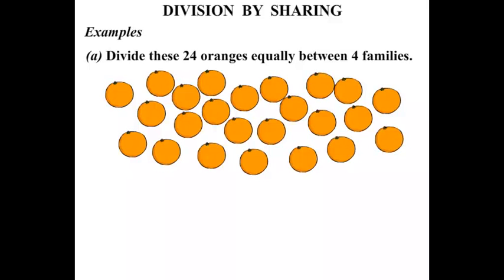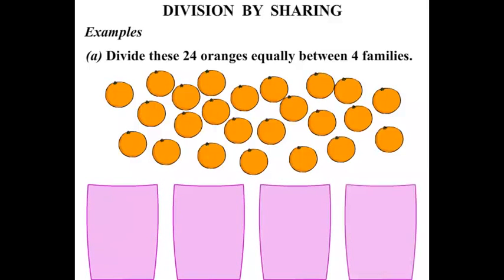Now between 4 families we are splitting them up. So 1, 2, 3, 4, 4 containers there. And let's see how many oranges go in each one. Now we are going to move 1 orange at a time.